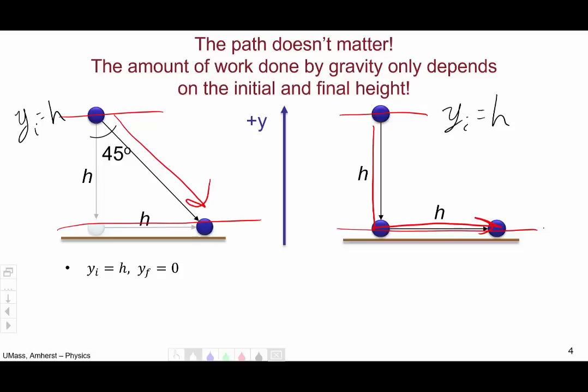The final height is zero, which means the delta y, yf minus yi, as it always is, final minus initial, gives us a delta y of negative h.